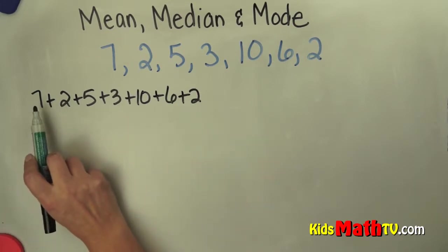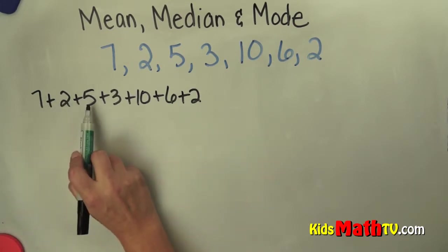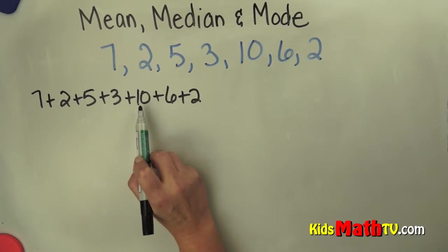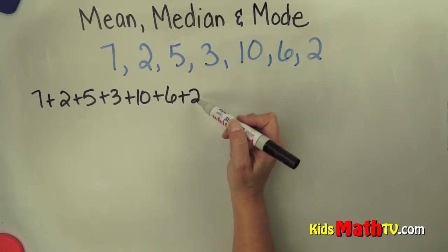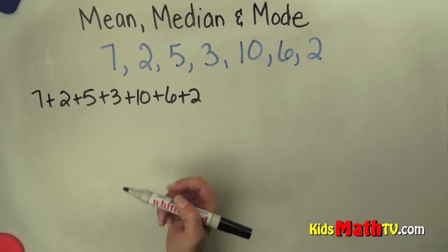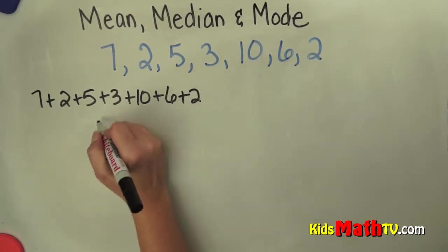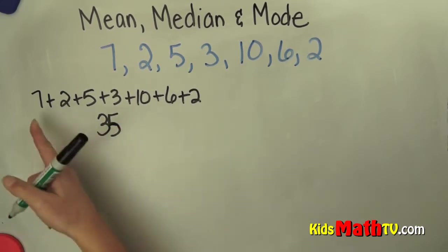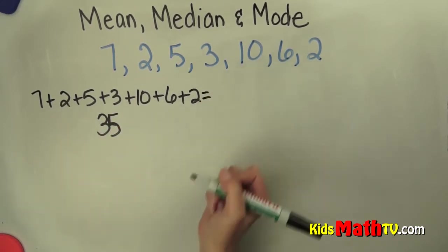I'm going to add these together: 7 plus 2 is 9, plus 5 is 14, 15, 16, 17, plus 10 more is 27, 28, 29, plus 6 more is 35. So we added all of those up and it equals 35.